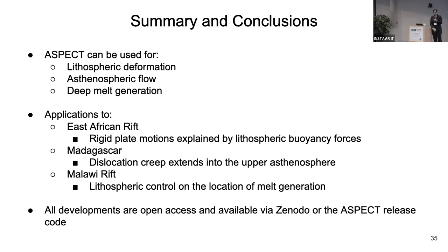Q: Can you tell us more about the asthenospheric flow examples and how they impact the surface — millimeter to two millimeter per year vertical rates over what spatial length scale? A: The asthenospheric flow example — lithospheric modulated convection — is pretty slow, like secondary convection of the mantle right below the lithosphere. We've seen rates up to about three centimeters per year.